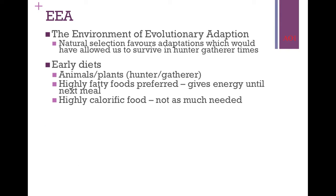Our early diets — early in terms of human evolution — would have come mainly from animals, from meat and plants; that's where the whole hunter-gatherer idea comes from. In evolutionary times it would have been very good for us to eat highly fatty foods, because they provide lots of calories and would have allowed us to survive from one hunt or kill to the next. You wouldn't need as much of it if it's highly calorific, and it would have allowed us to survive between gathering food.